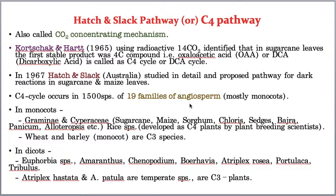In monocots, especially the Gramineae and Cyperaceae families, there are several examples including sugarcane, maize, sorghum, and bajra. An important point: rice is actually a C3 plant, but some physiologists through plant breeding have converted it into a C4 plant.